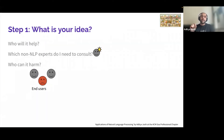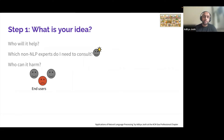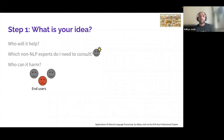The first step is to understand what your idea is. Ask: who will it help? Which non-NLP experts do I need to consult — for example, you may want to reach out to epidemiologists when working on epidemic intelligence. The third question is: who can it harm? Does the project unfairly bias against certain people by disadvantaging them? You need to think about this when fleshing out the idea.